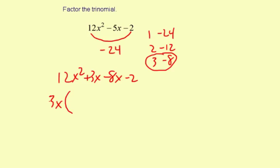So then what's left over? 3x times what makes 12x²? Well, 3 times 4 makes 12, and x times x makes x², so I have an x there. And then 3x times what makes 3x? Well, that's a plus 1. So there's the first two terms all done.